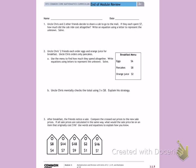Number 1. Uncle Chris and two other friends decide to share a cab to go to the mall. If they each spend $7, how much did the cab ride cost altogether? Write an equation using a letter to represent the unknown. Solve.